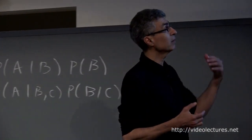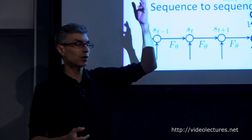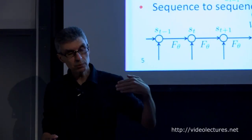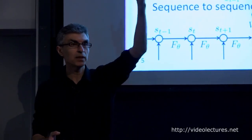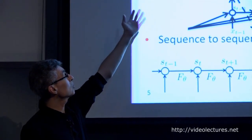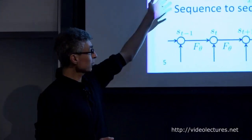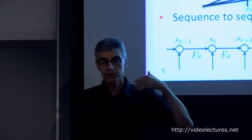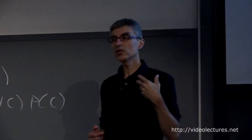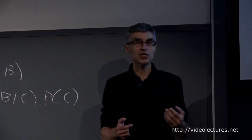Once we understand this principle, we can play many games. We can read a sequence and predict or calculate some vector for classification. That's sequence to vector. We can do sequence to sequence of the same length. We can do vector to sequence — generate a sequence conditioned on a vector. With neural nets it's easy to make a conditional generative model: we just stick in extra inputs to condition every state on some vector features.